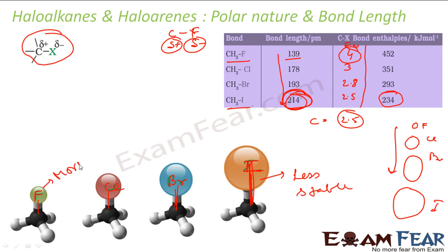Again, this is more stable. This thing we have learned in the class 11 chapter where we see that the bond length is more, easy to break, less stable. Bond length is less, difficult to break, more stable.